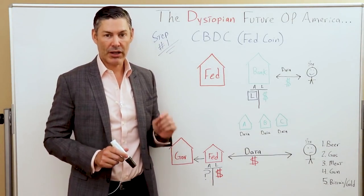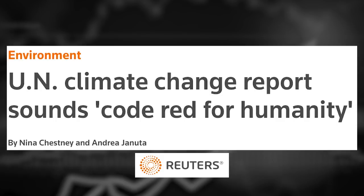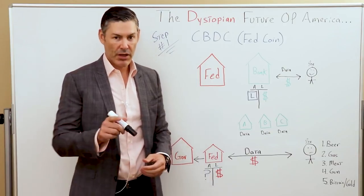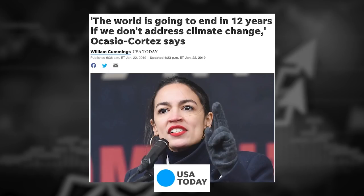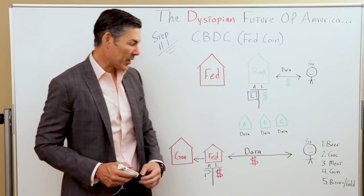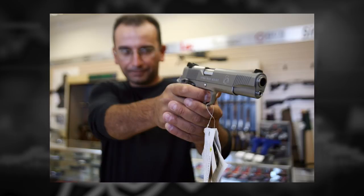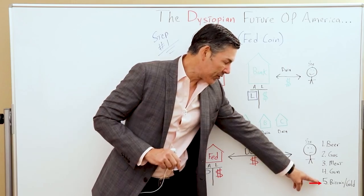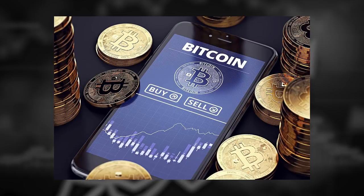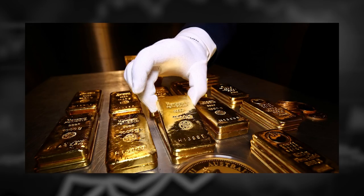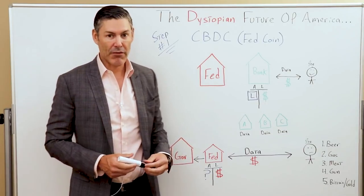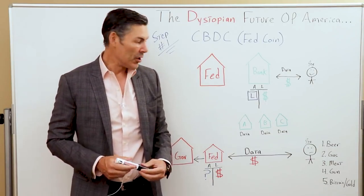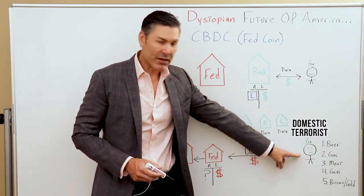We all know that climate change is going to destroy the human race within 10 years — just ask AOC. And then let's say after you polish off your steak and drive around in your diesel pickup truck, you decide to buy a gun. And to make matters even worse, you go out and buy Bitcoin and gold. In this case, in the eyes of many at the government and the global elite, you are really a domestic terrorist.